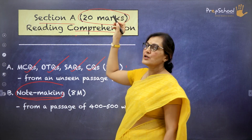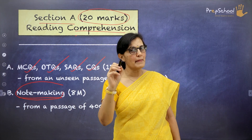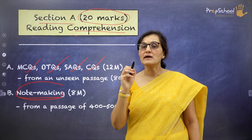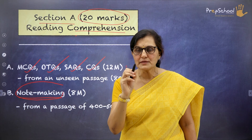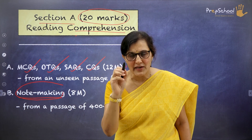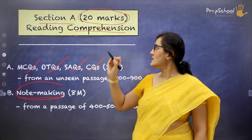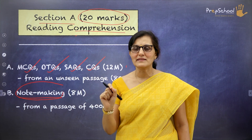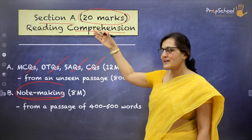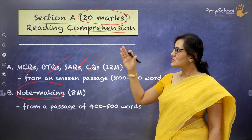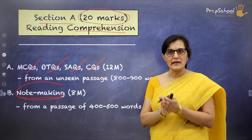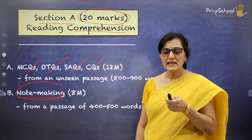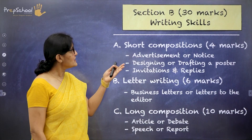Section A is for 20 marks. Your next question will be: 'Ma'am, is it possible to score 20 on 20?' My answer is an optimistic yes — you will definitely score 20, provided you read between the lines, understand, and then answer. So that being Section A, let's move further to check out what is there in Section B.